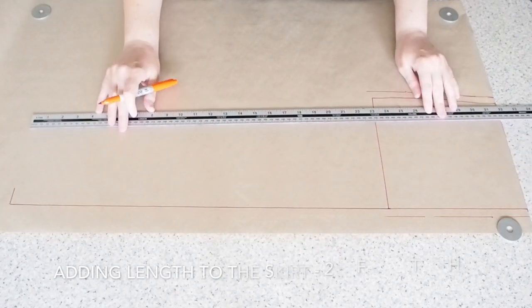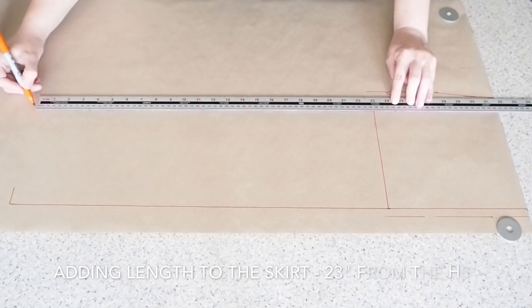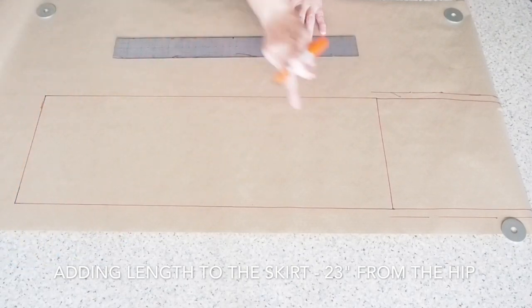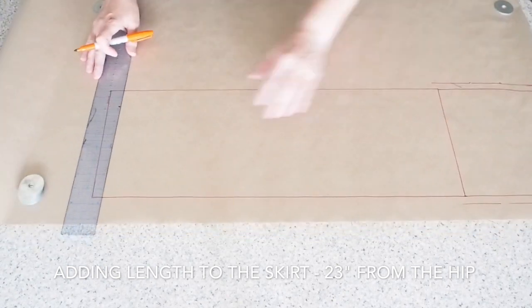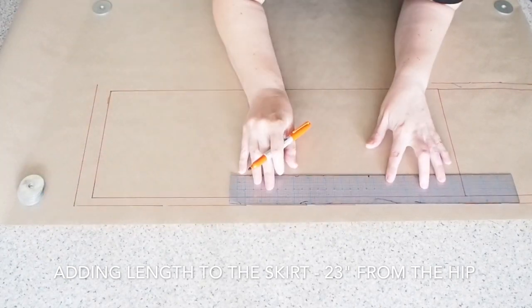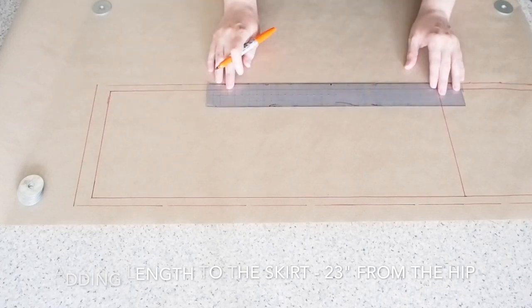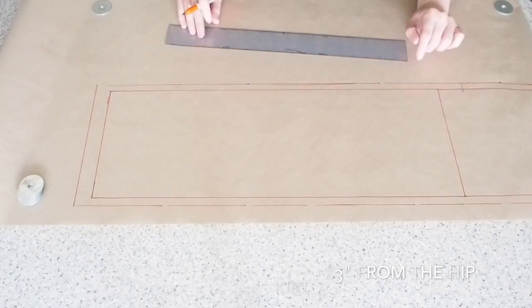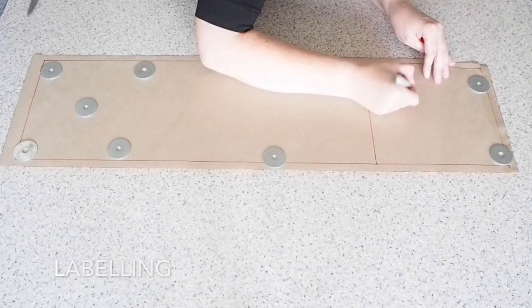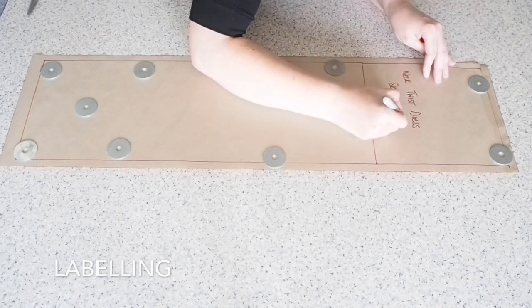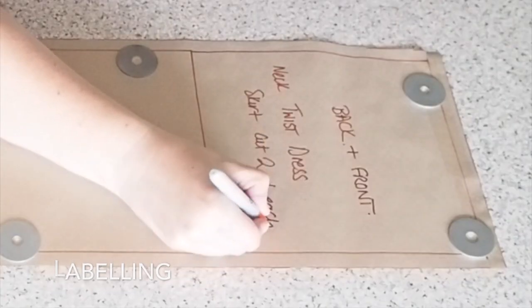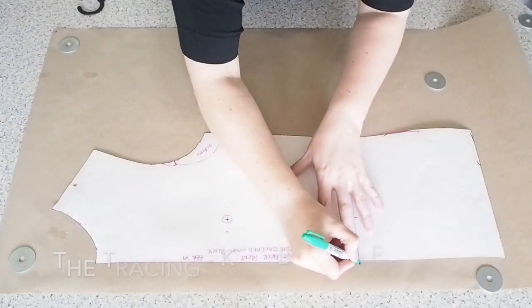So back to the skirt. So here I'm just measuring down the center back seam and the side seam 23 inches. Drawing in my new hemline. And then just to add hem and seam allowance. So I have a one inch hem allowance. And then at the side seam and the center back seam, one centimeter. So I'm just cutting that piece out and adding a one centimeter seam allowance at the waist. And labeling. So this skirt piece is going to be for my back and front. So I'm going to cut two out of each. So that's my skirt done.